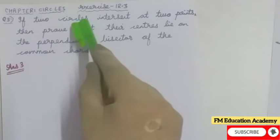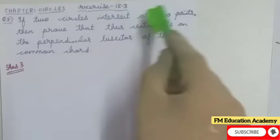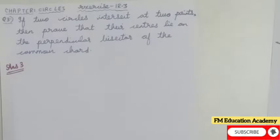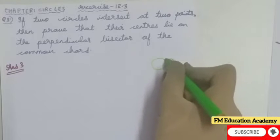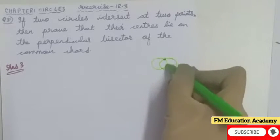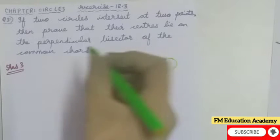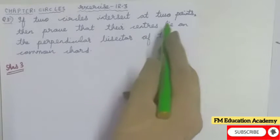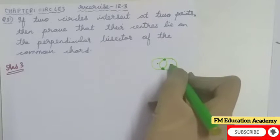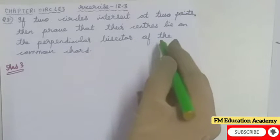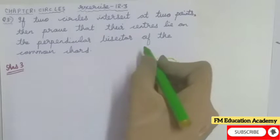The question tells us that there are two circles and those two circles meet at two different distinct points — that is given to us. We then have to prove that their centers, the center of circle one and the center of circle two, lie on the perpendicular bisector of the common cord.